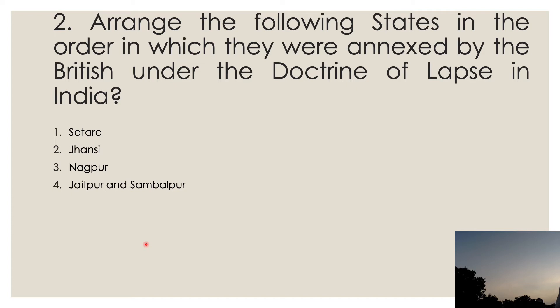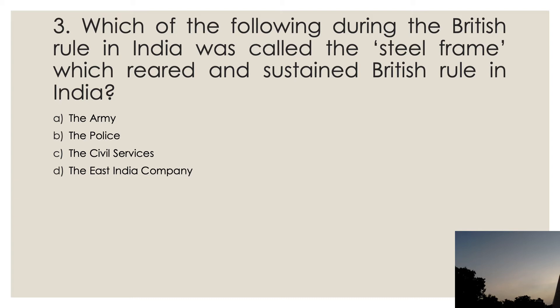The correct sequence of annexation is: first, Satara in 1848; then Jaitpur and Sambalpur in 1849; then Jhansi in 1853; and then Nagpur in 1854. So the answer order is one, four, two, and three.